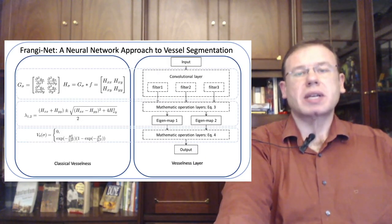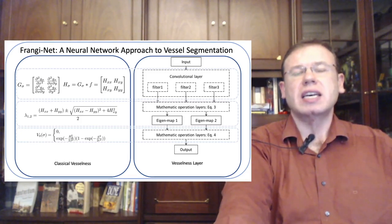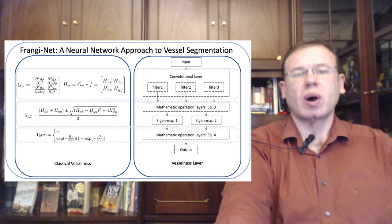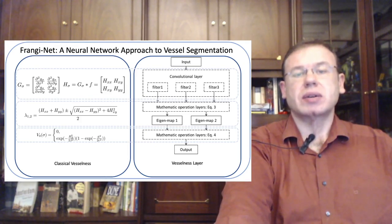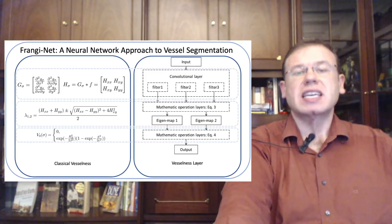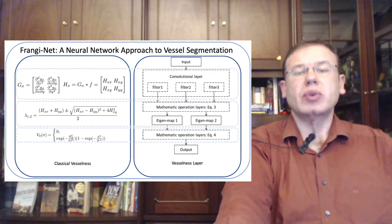However not all applications will allow access to such extensive prior knowledge as for the case of CT. Therefore it is interesting to explore whether we can also reuse classical methods. Fu et al. did so in their FrangiNet approach. This network is inspired by Frangi's Vesselness filter. They even demonstrated that observations such as eigenvalue computations can be expressed as layers.